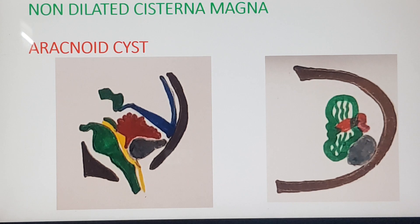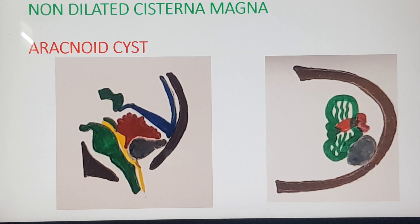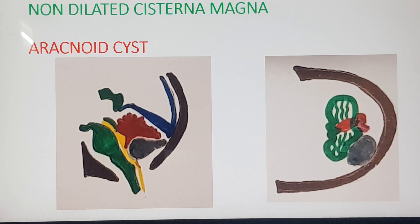When the cisterna magna is not dilated, the vermis is normal, and the brainstem is normal, but there is an extra structure causing extrinsic pressure effect on the cerebellum and vermis, then it is an arachnoid cyst.